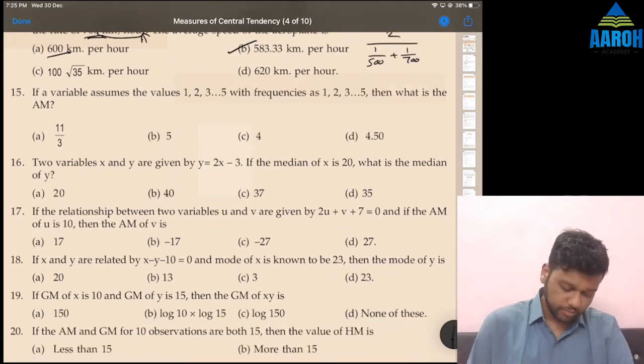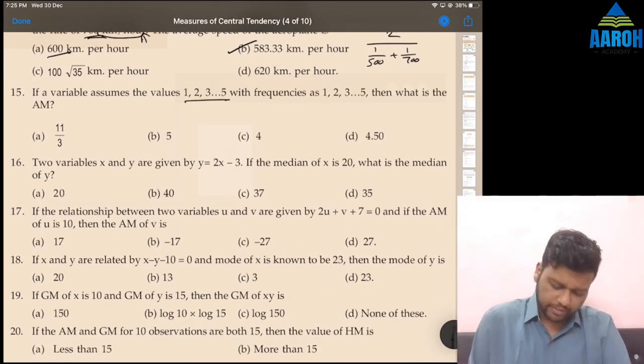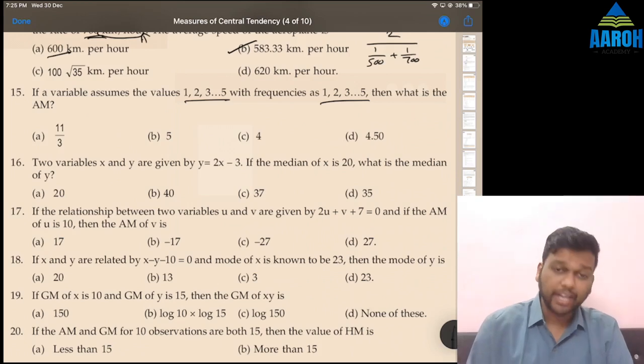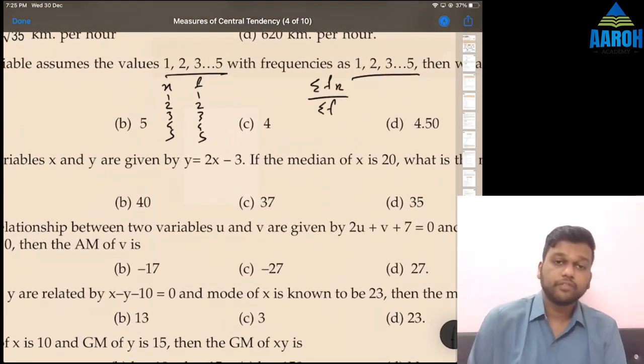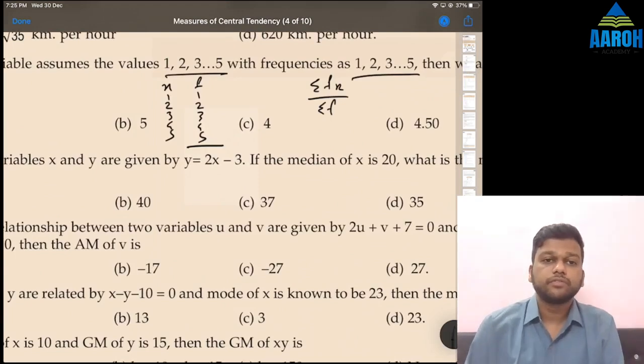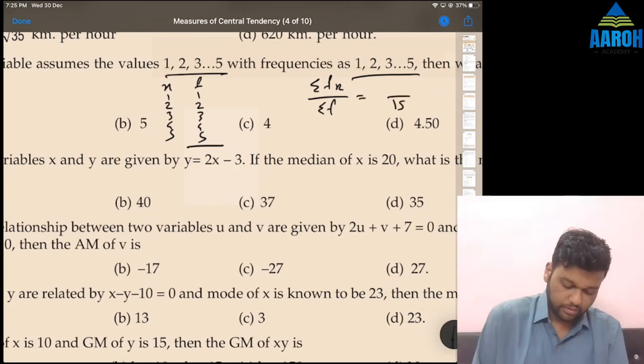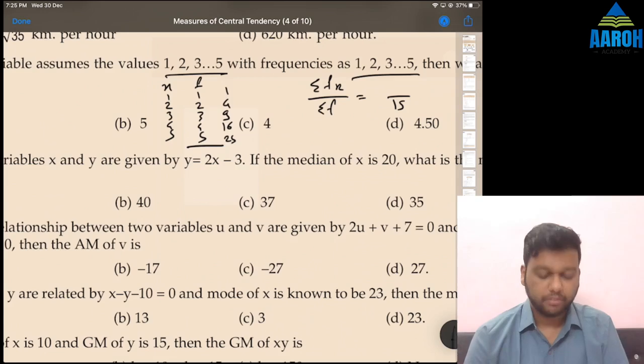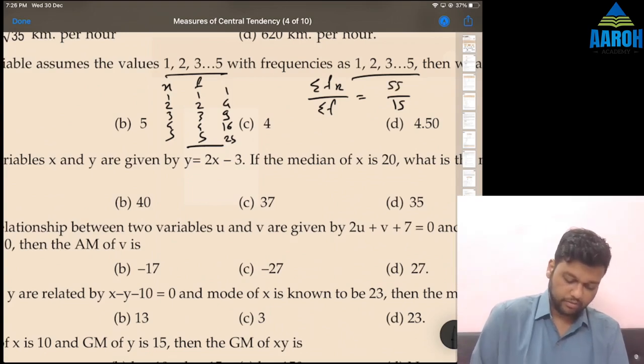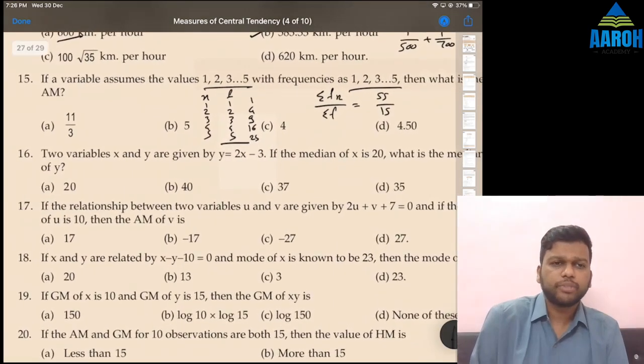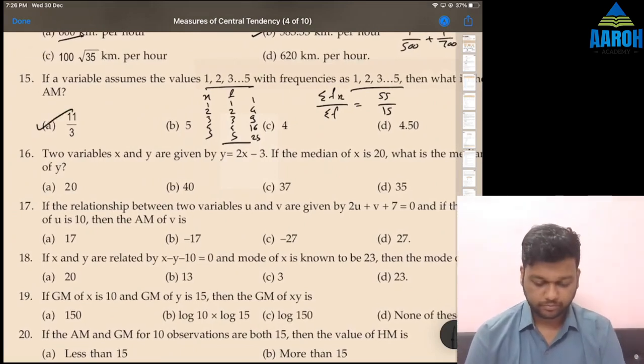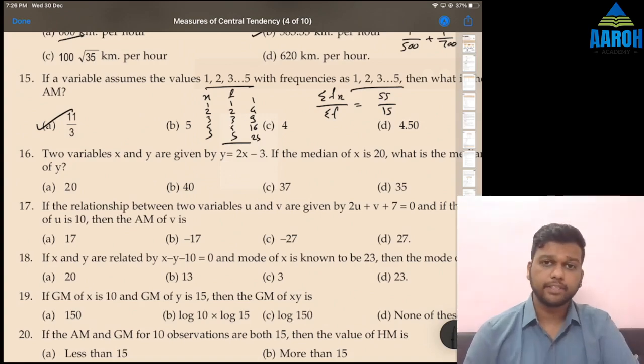If a variable assumes the values 1 to 5, with frequency also 1 to 5, then what is the AM? X is 1, 2, 3, 4, 5. F is also 1, 2, 3, 4, 5. We know that arithmetic mean is summation FX upon summation F. Summation F is 15. Summation FX will be 1, 4, 9, 16, 25. That's 55. So 55 by 15 will be the answer, which is option A. 11 by 3.